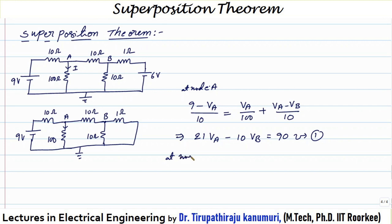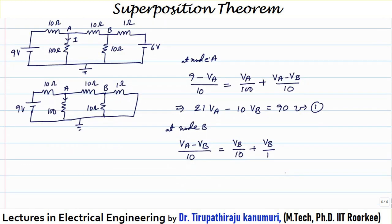Similarly, applying KCL at node B: (VA minus VB) divided by 10, the current entering node B, equals VB divided by 10 plus VB divided by 1. Simplifying, this becomes VA minus 12·VB equals 2. I am taking this as equation number 2.